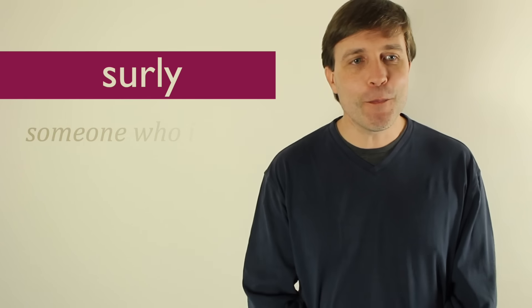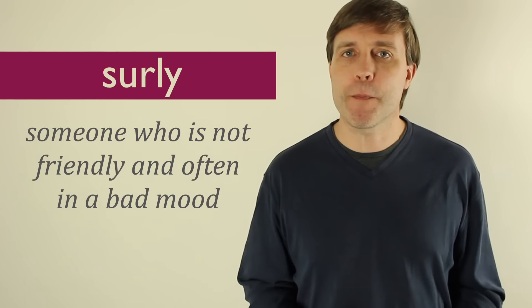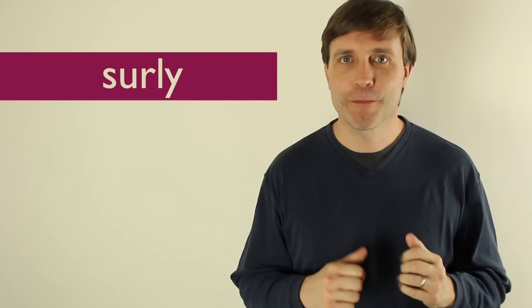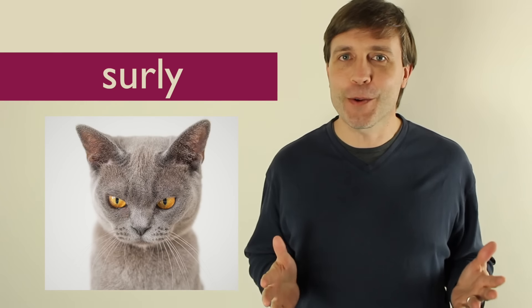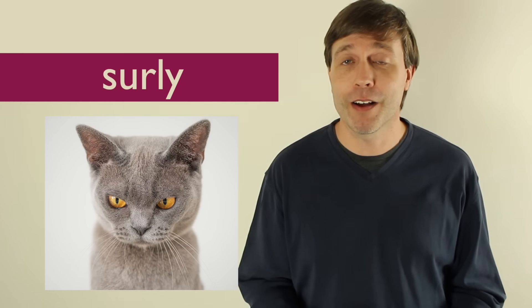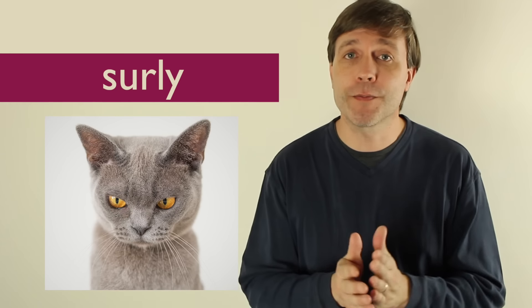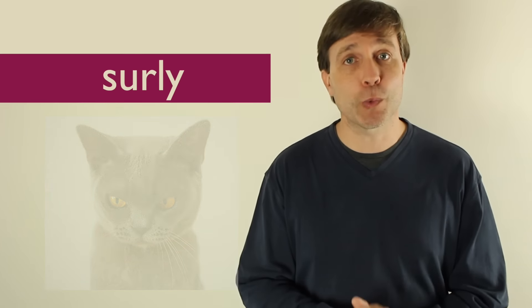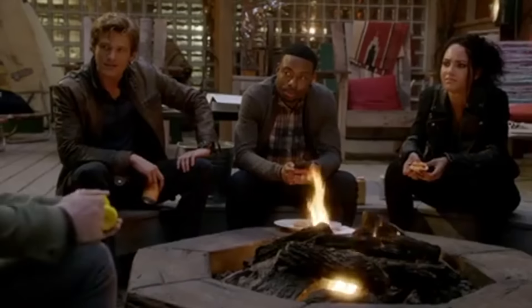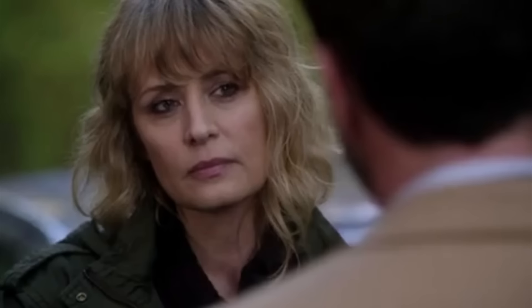The next adjective is surly. This just means that someone is not very friendly and they're often in a bad mood. We would often use these words to describe people, but you could use them to describe animals as well — that picture is a perfect example of surly because that is one surly cat. Examples from usage: 'Sometimes you can come off a little surly.' 'I'm not surly.' 'She gets very surly when you disobey a direct order.' 'You're surly, suspicious. You don't play well with others.'